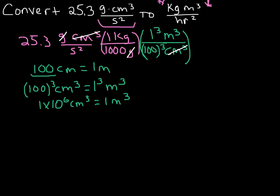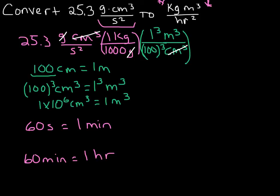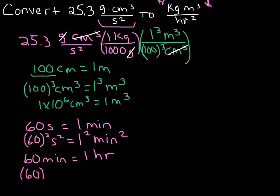Now, what do we do with time? We have seconds squared on the bottom and we want to go to hours squared. We know there are 60 seconds in one minute, and there are 60 minutes in one hour. Since the seconds are squared and the hours are squared, we apply the same logic: 60 squared seconds squared equals one squared minute squared, and 60 squared minutes squared equals one squared hour squared.